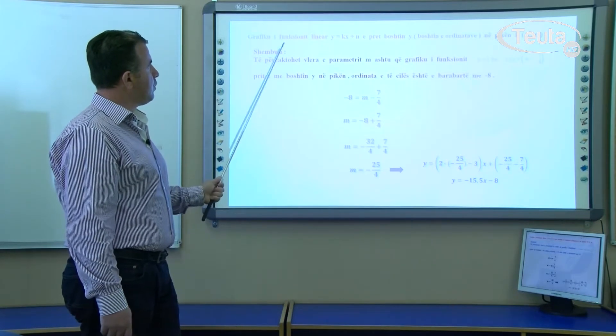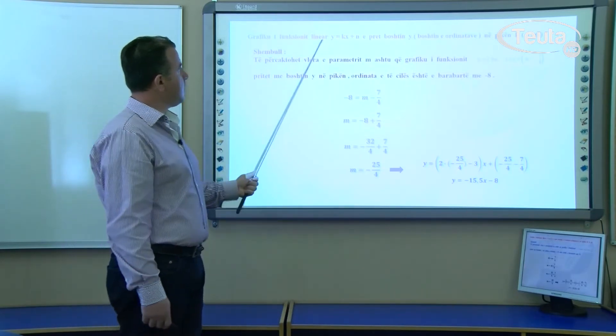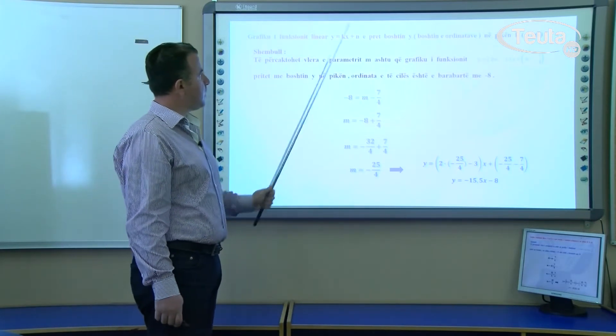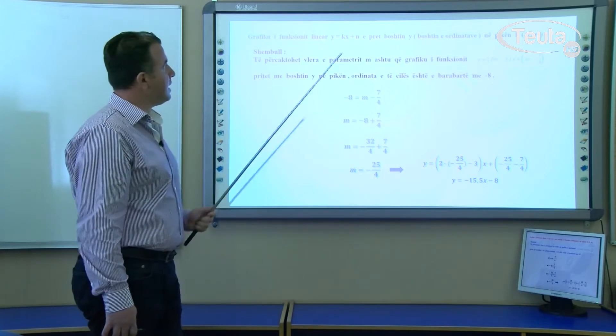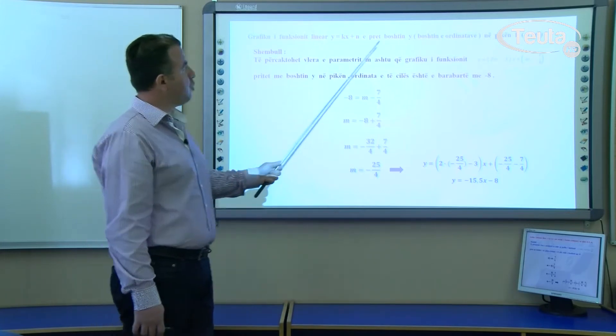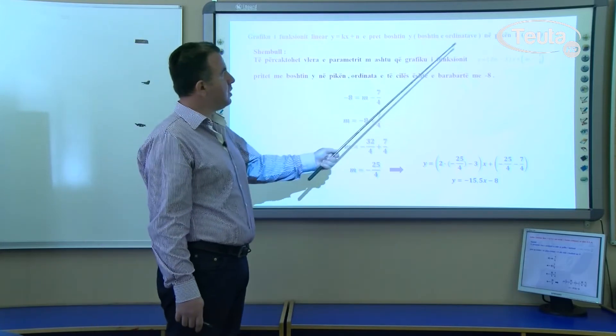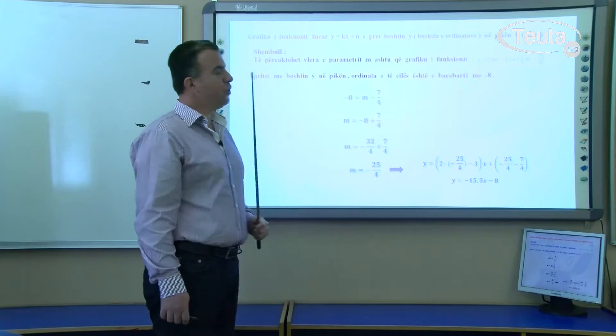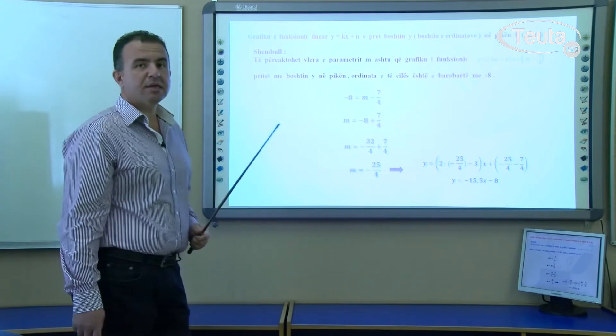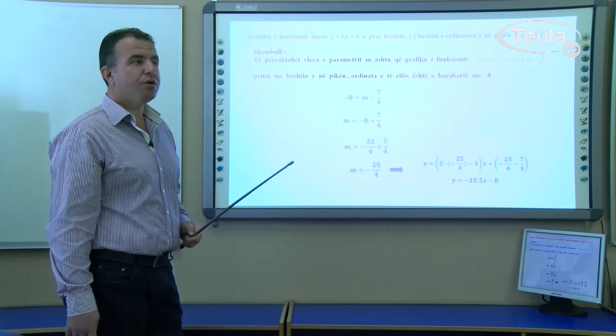Grafiku i funksionit linear y = kx + n e pret boshtin y në pikën B me koordinata (0, n).